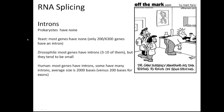The higher organisms tend to have more and larger introns. For example, yeast, which is a very simple eukaryote, most of the genes don't have any introns at all. Only 200 out of the over 6,000 genes in yeast have any intron at all.